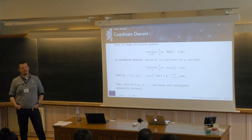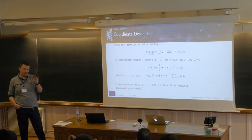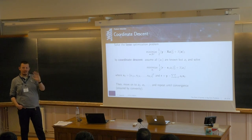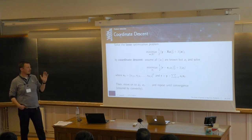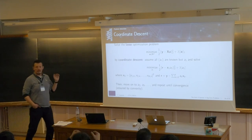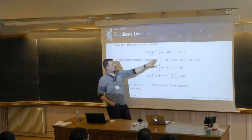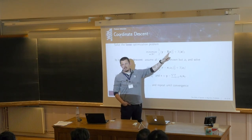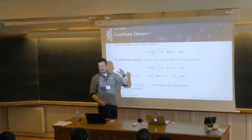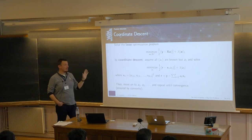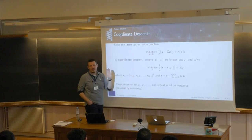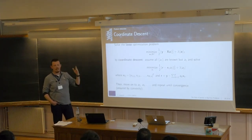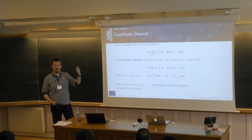Regarding compressed sensing: be careful — compressed sensing goes a step further. It assumes we can design the measurement matrix X such that if the original signal is sparse, it can be perfectly recovered. However, since X comes from physical measurements, we cannot ensure it satisfies the Restricted Isometry Property (RIP) that compressed sensing theory requires. So compressed sensing is related but not directly applicable in all measurement scenarios.